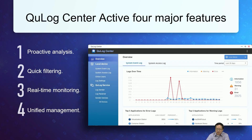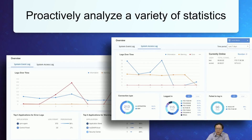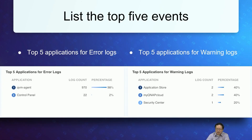QLog Center supports four major features. The first one is proactive analysis. The second is quick filtering. The third is unified management. Proactive analysis can analyze a variety of statistics and provide very useful information, so we don't need to check logs one by one or remember extra information. What kinds of information can we get from QLog Center? We can see summaries such as the top five ranking of applications for error logs or warning logs.